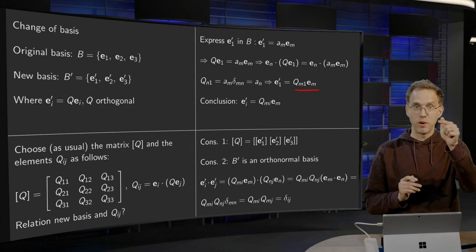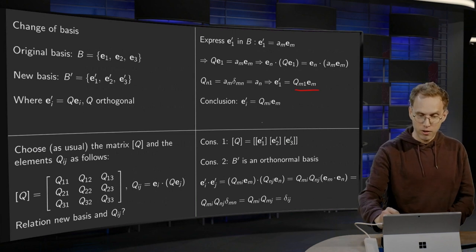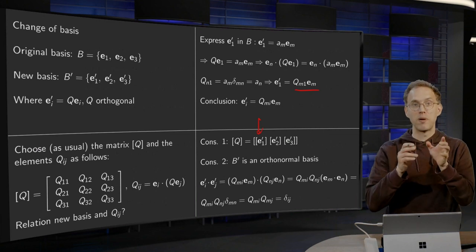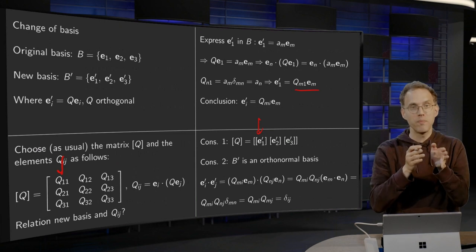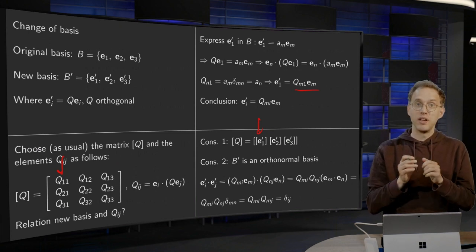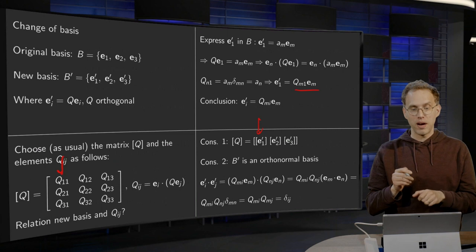So this first column of the matrix Q gives you the components of E1' in the old basis. And similarly, for the second and the third column.